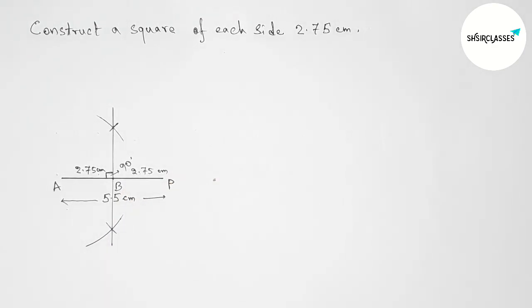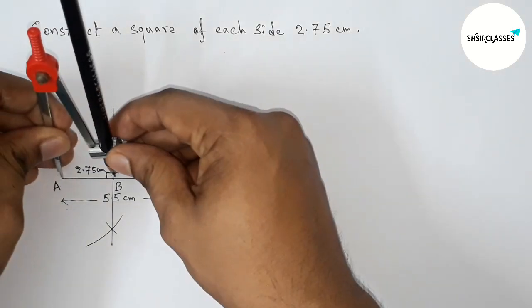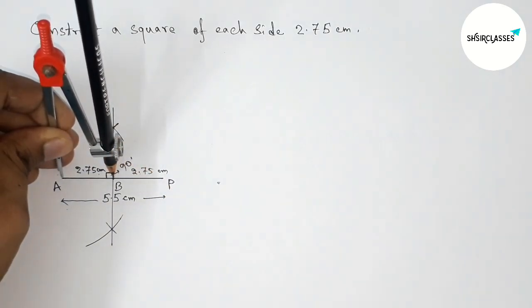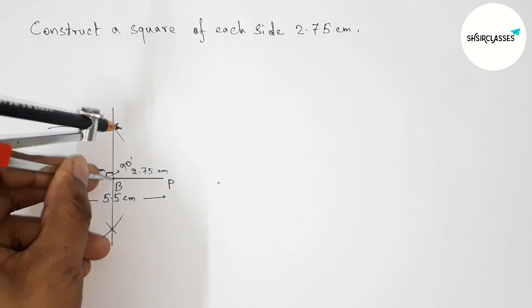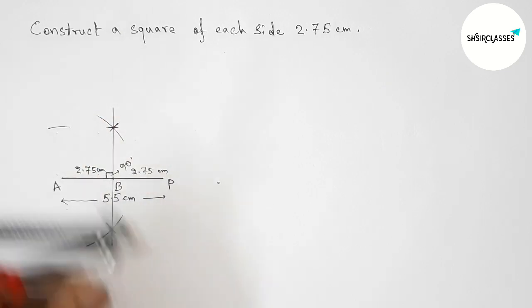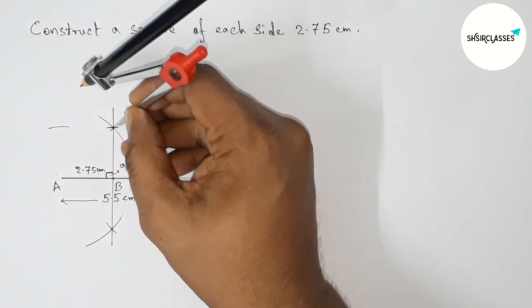Now taking here the length AB that is 2.75 centimeter by this way, and putting the compass on point A and drawing an arc here, and putting the compass here and cut here again with the same length.